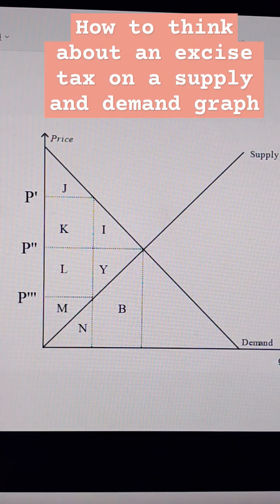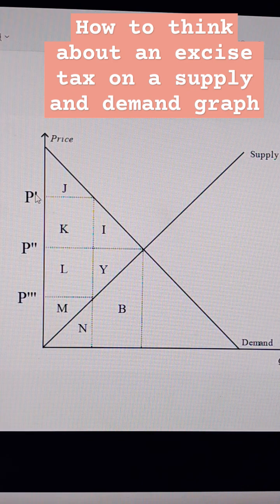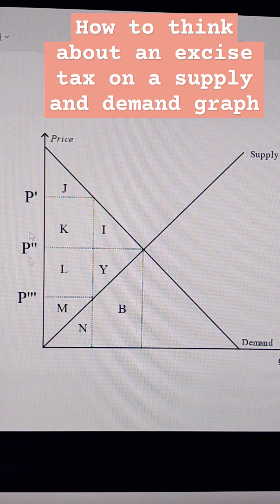Here we have a market and we're told that there's an excise tax, which is the distance between P' and P3, or P1 and P3.